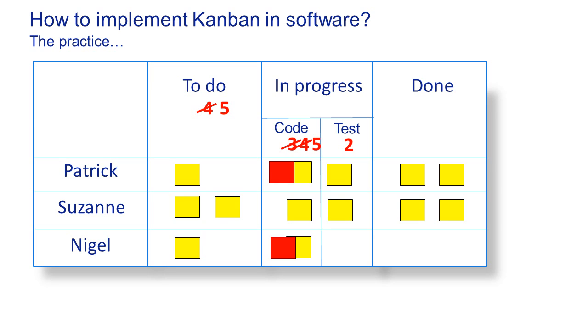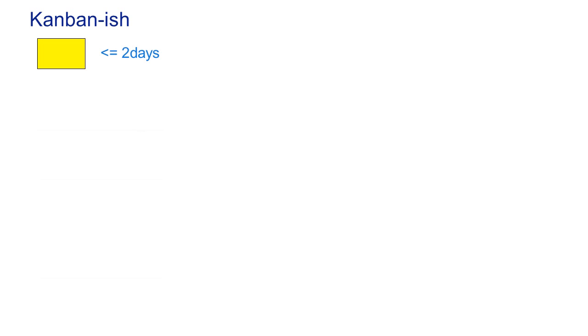It's very hard to say to a customer or project leader 'I'm sorry, we can't start working on your task because it violates our work in progress limit' — that doesn't mean anything to people outside the team. So we introduced something I've called Kanban-ish, based on a presentation I heard at a Kanban conference a few years ago. Basically, for each item we say it's got to be less than or equal to two days. If an activity is longer, we split it over multiple post-it notes.